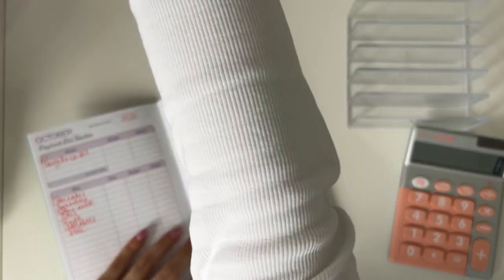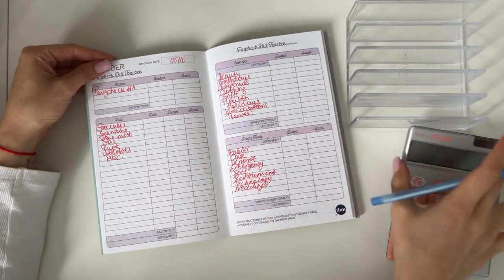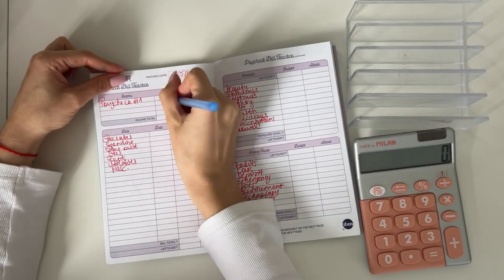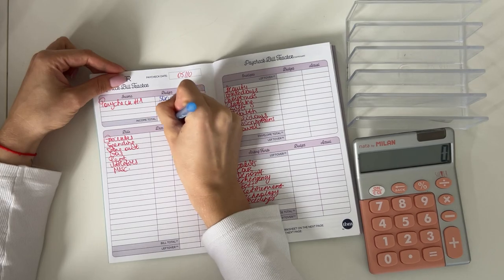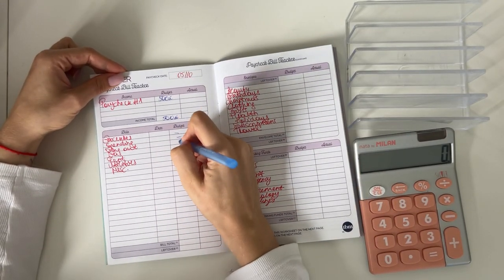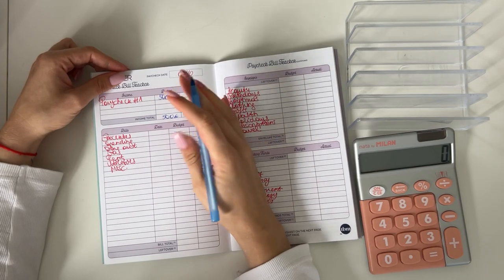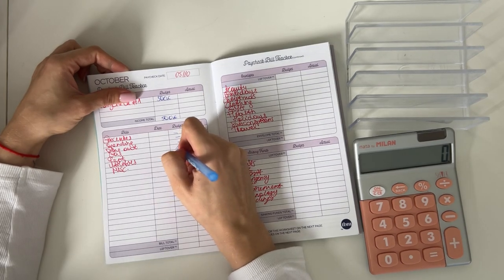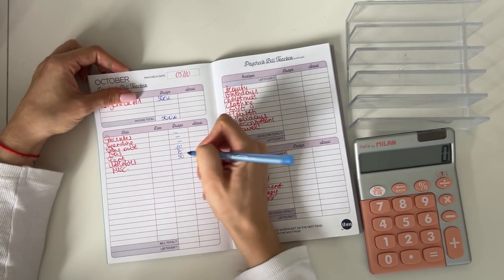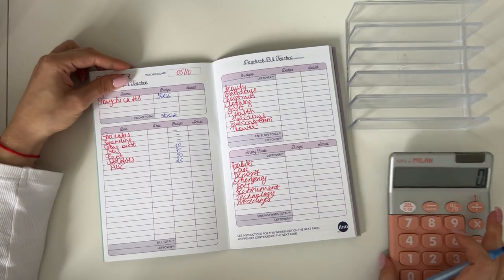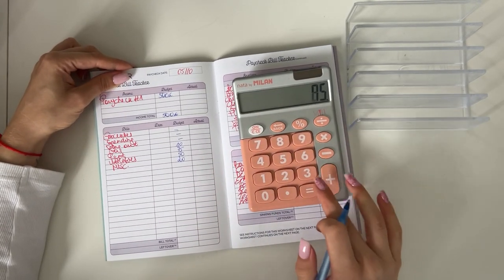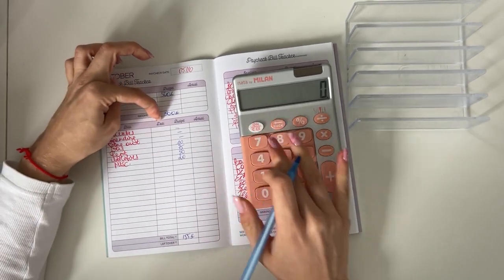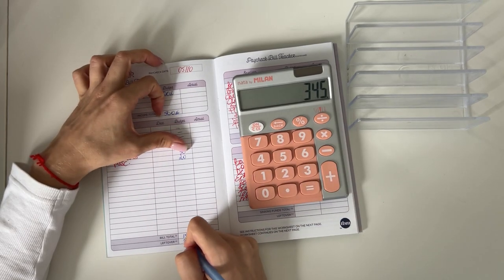For the first paycheck of October we have a budget of 500 euros. As I'm going to be gone for this week, I'm not going to be putting anything in grocery, spending, or dine out because I won't be spending that money. I will be spending it from travel money. So 10 will be going into gas, 75 in rent, 50 in utilities, and 20 in miscellaneous. Total that will be 155, so 500 minus 155 is 345.